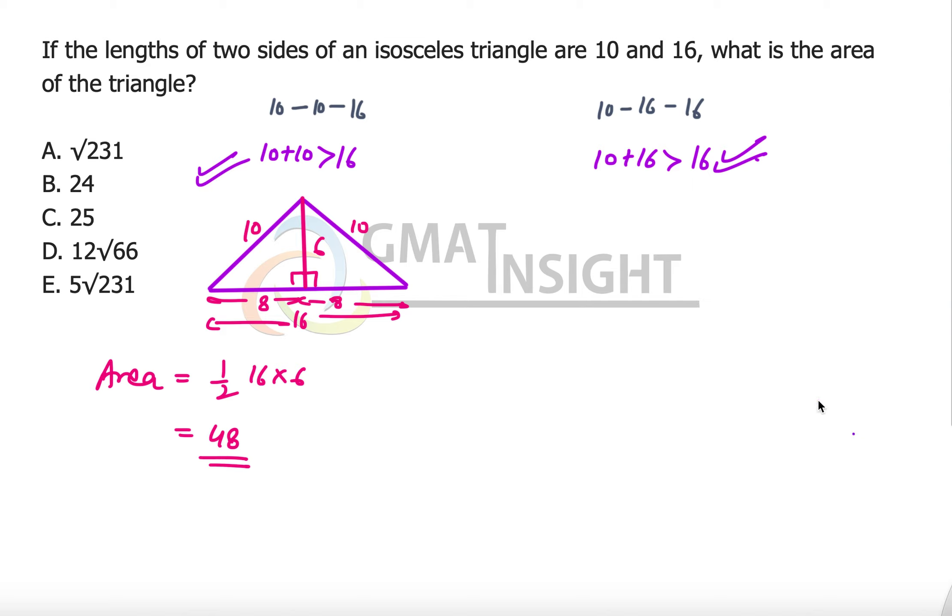Now let's move to the second case. The second possible triangle has two sides of 16 and one side of 10. The triangle looks like this, where these two sides each have length 16 and this third side is 10. We will drop the perpendicular from the vertex which joins the two equal sides, and this perpendicular will bisect the base into two equal parts, 5 each.